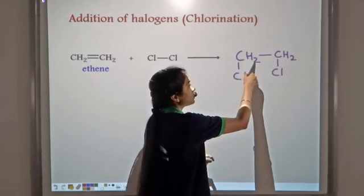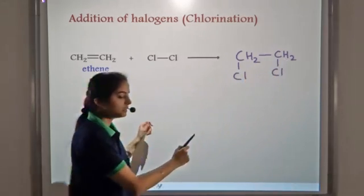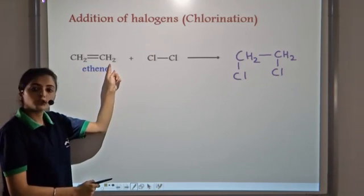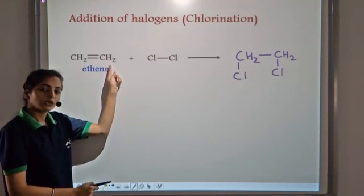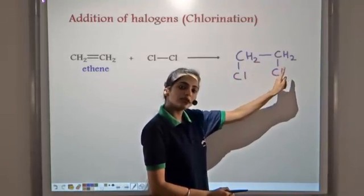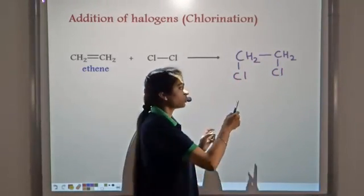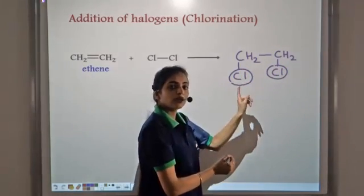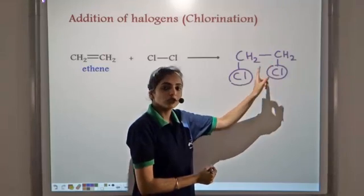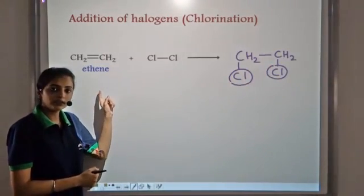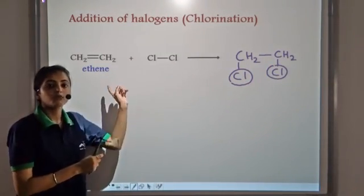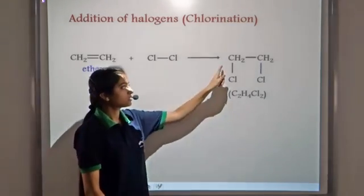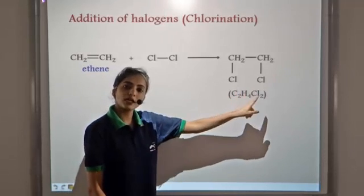The chlorine atoms are not replacing any hydrogen atom. In ethene we have four hydrogen atoms — two attached to the first carbon and two to the second — and all four hydrogen atoms remain intact. The two chlorine atoms attach themselves to the two carbon atoms, so the unsaturated ethene is converted into a saturated product, C2H4Cl2, by the addition reaction.